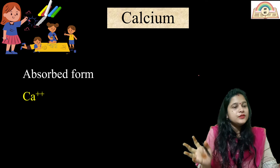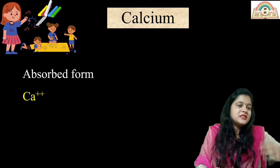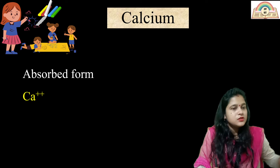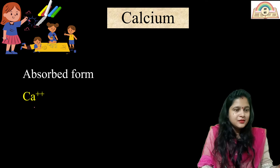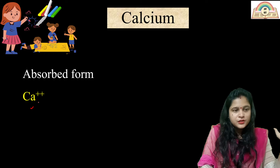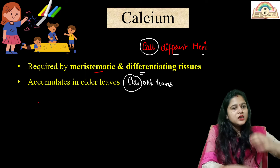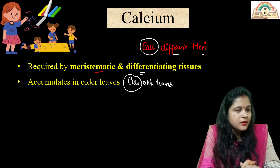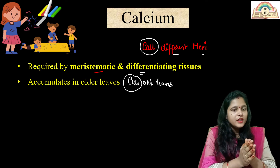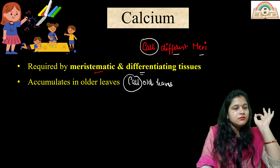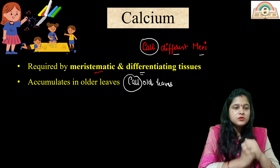In which form is calcium absorbed from the soil by the roots? It's calcium ions, Ca²⁺. Now, calcium is required in the meristematic and differentiating tissues.